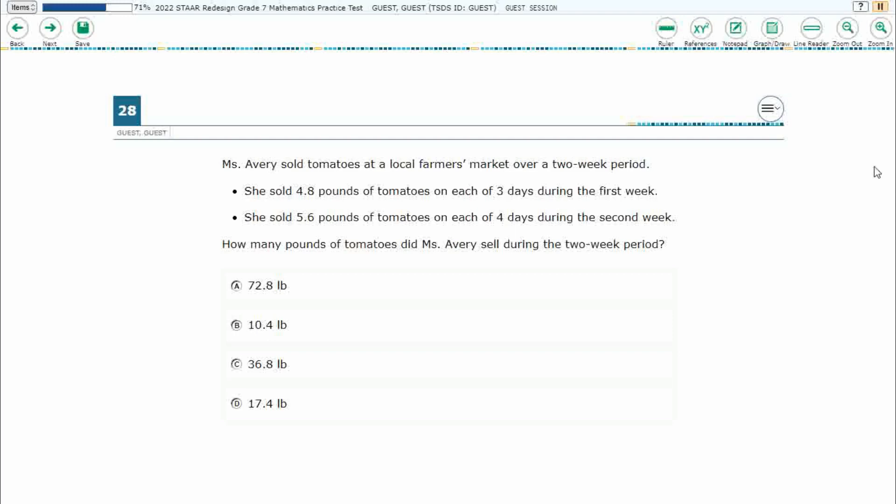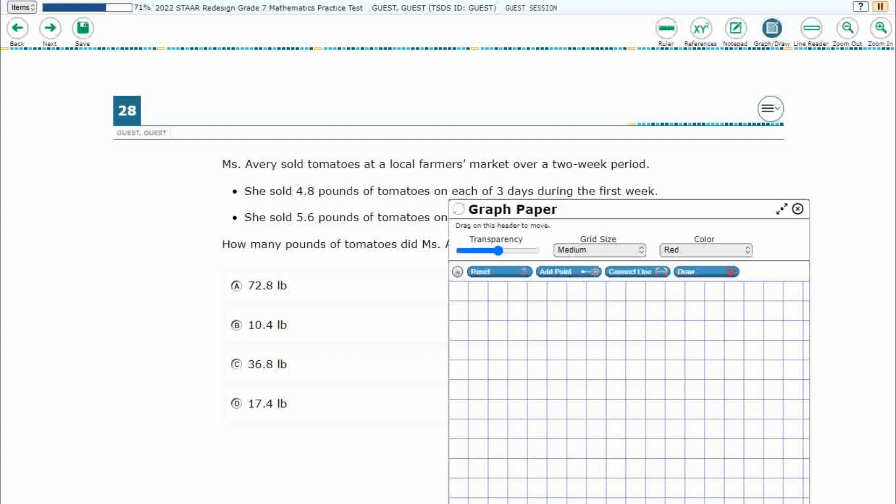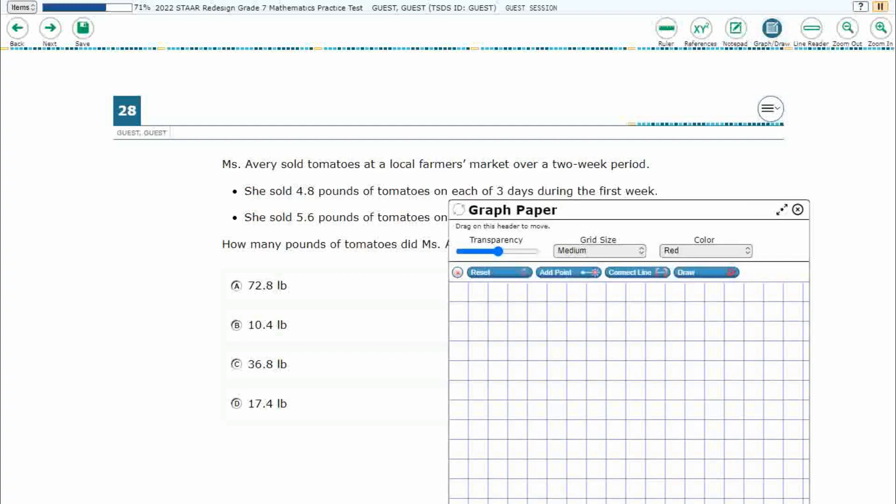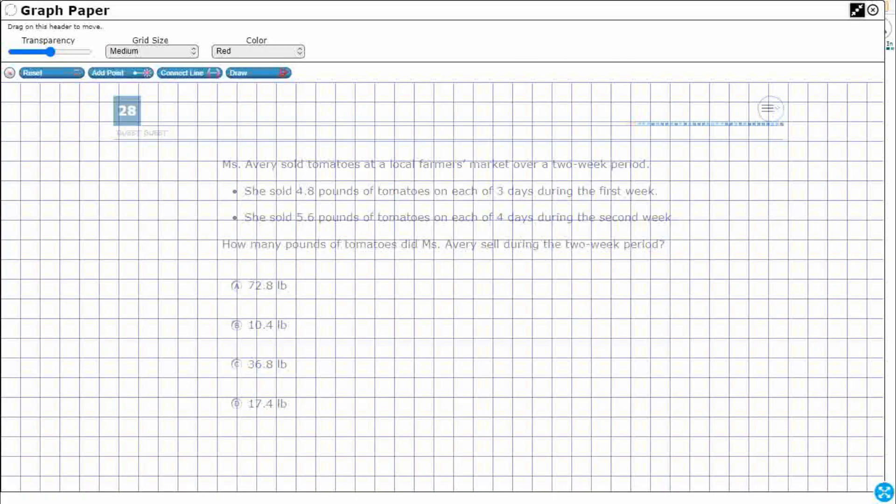So, we have Ms. Avery selling tomatoes, and we got 4.8 pounds of tomatoes on each of three days, and then 5.6 pounds of tomatoes on each of four days. How many pounds of tomatoes did Ms. Avery sell?